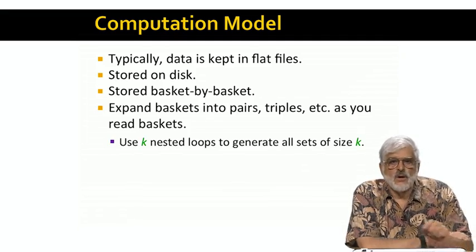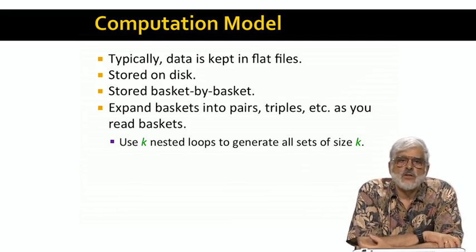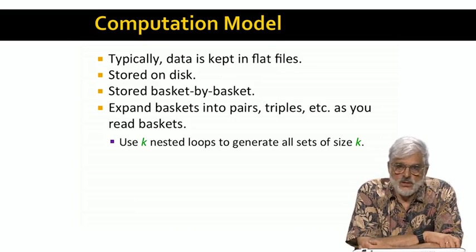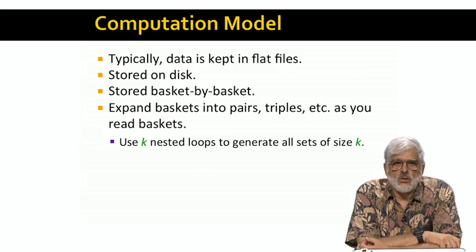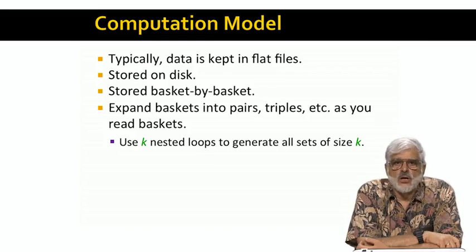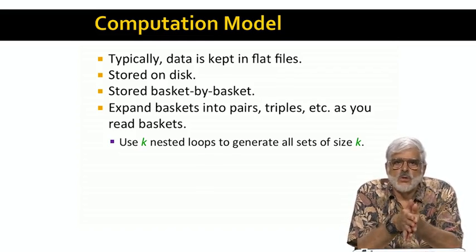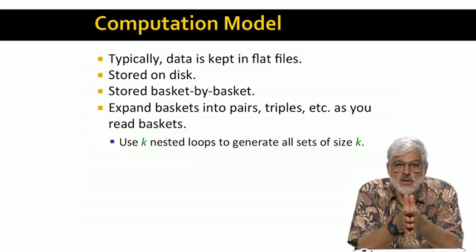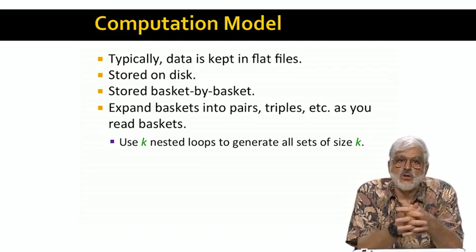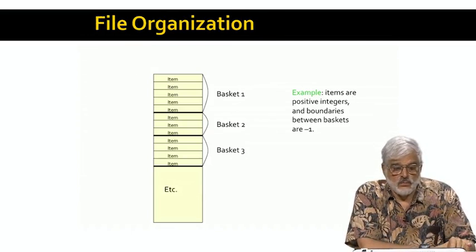We're also going to assume the data is stored basket by basket rather than by item or in any stranger way. And we're going to have to find, for each basket, all its subsets of a particular size. We can do that in main memory once the basket itself is there. We can use k-nested loops to generate all subsets of size k. Since we assume baskets are small, and often k will be only one or two anyway, we're not going to worry about the cost of doing this generation. However, you should be alert to the possibility that if you were asked to generate all subsets of size 100,000 from a basket with a million items, you just couldn't do it.